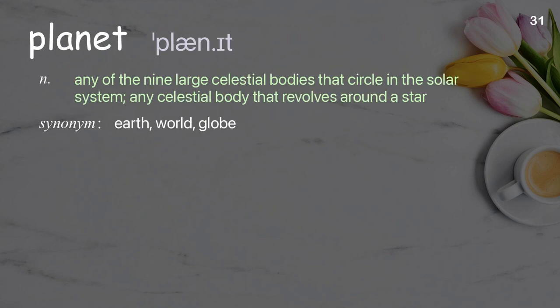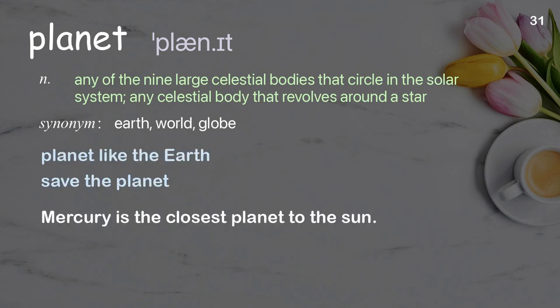Planet: Any of the nine large celestial bodies that circle in the solar system; any celestial body that revolves around a star. Examples: planet like the Earth, save the planet. Mercury is the closest planet to the sun.